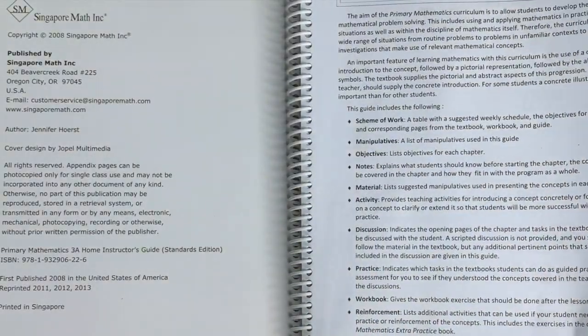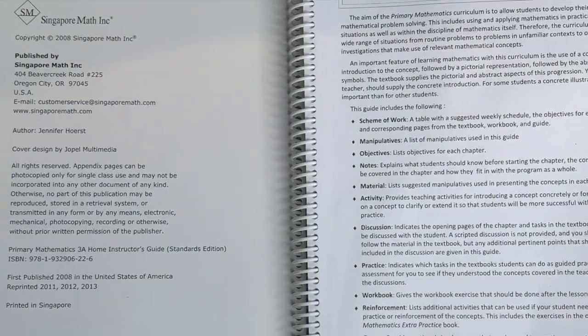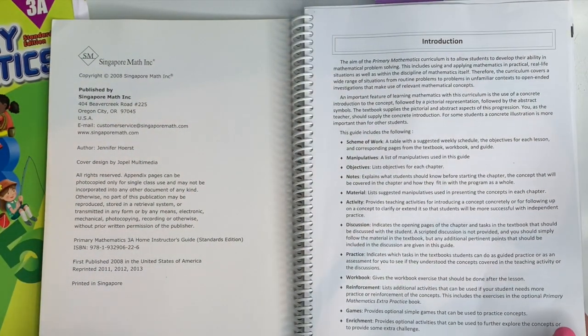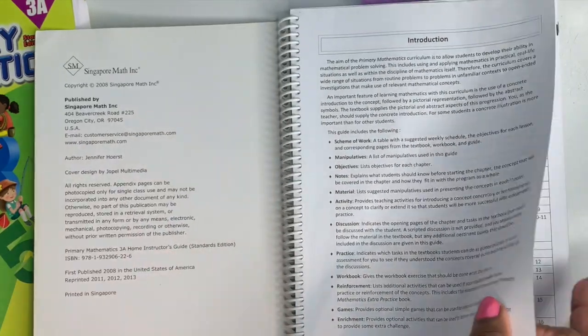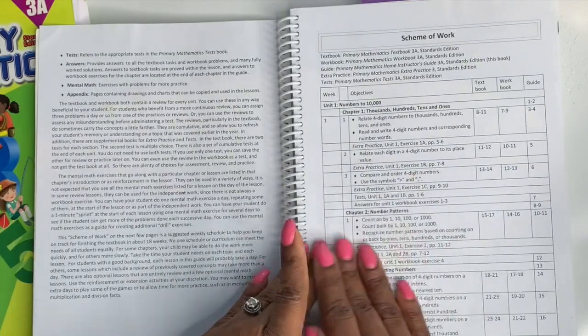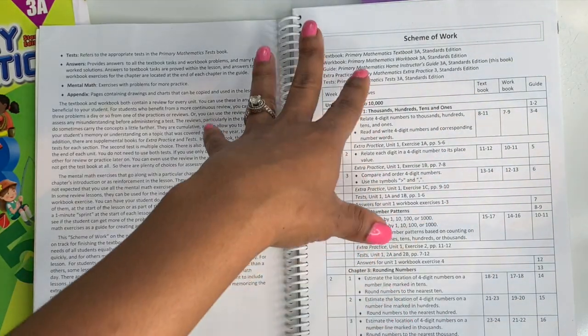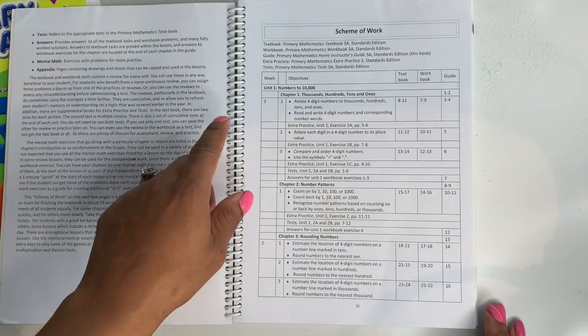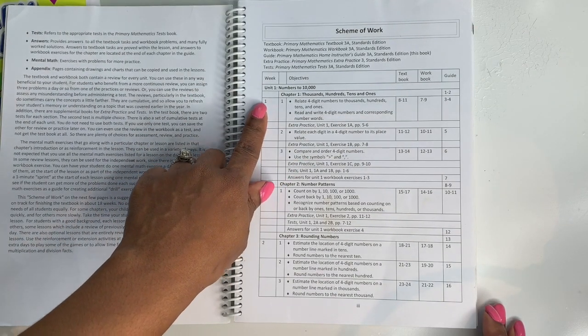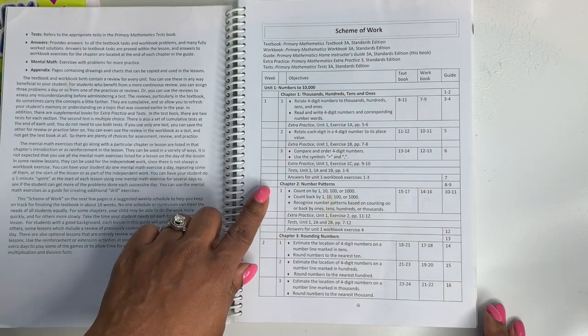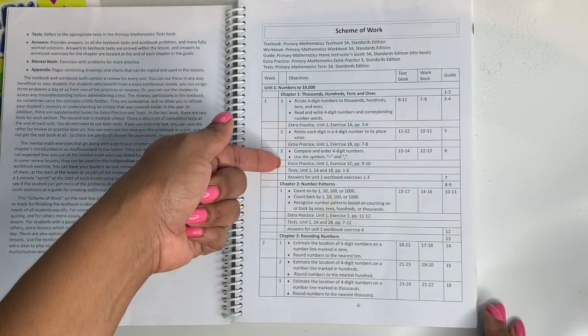So here is the walkthrough for the home instructor's guide for 3A primary mathematics, also known as Singapore math. All right, so here's your intro. We went over the scheme of work. That's your nuts and bolts. This is your weekly schedule. You have your weeks and you have your days. So here's your week. And then each number you see represents a different day to do your lessons.